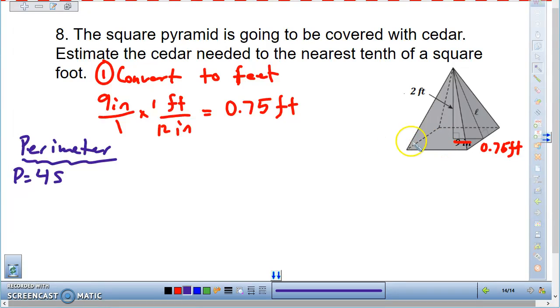So perimeter, since this is 0.75, this whole distance, the length of s is going to be one and a half feet. So that is s.